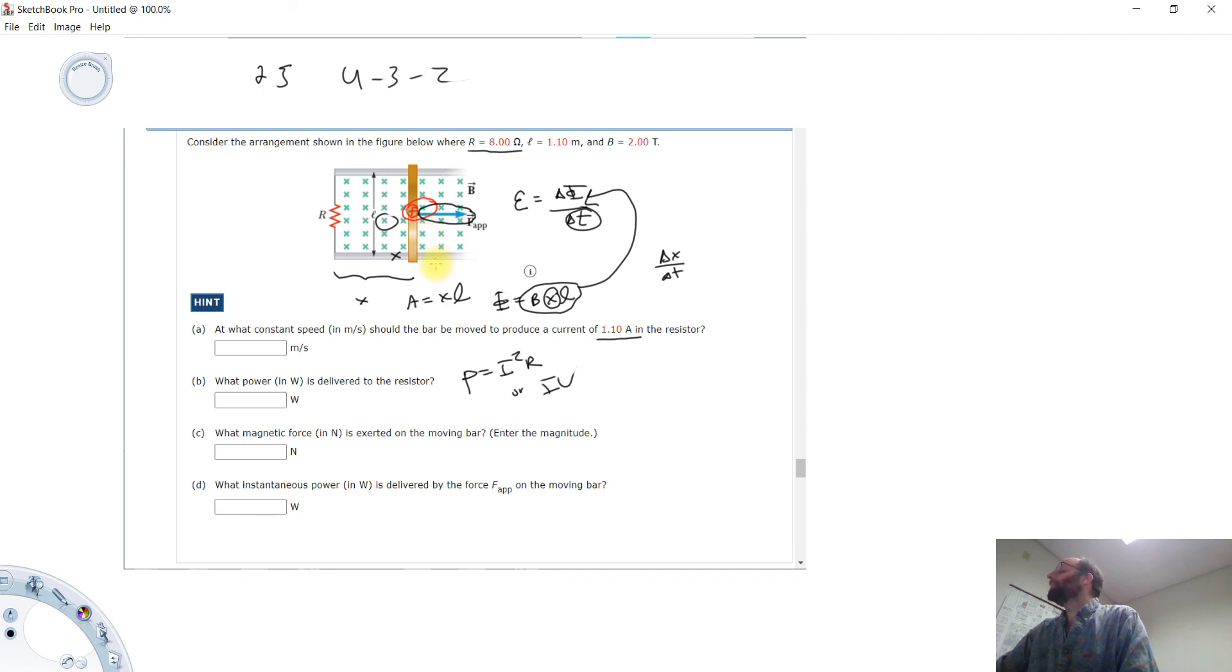Alright, this is actually an equilibrium problem. This bar right here is moving at constant speed. It doesn't say anything about speeding up or slowing down. That means the net force is zero.